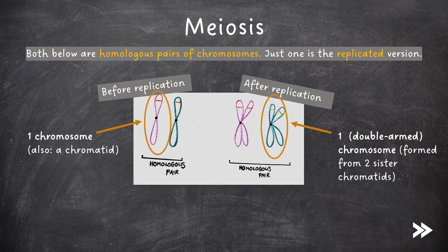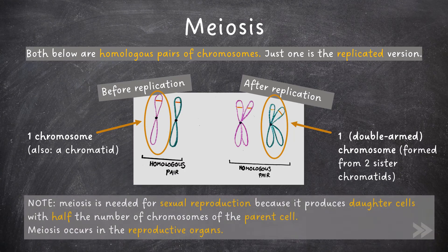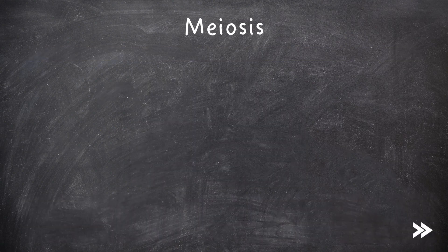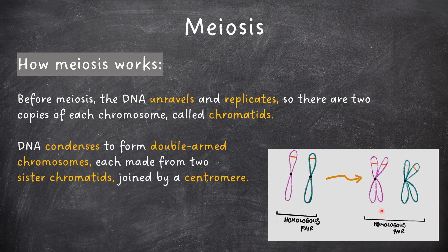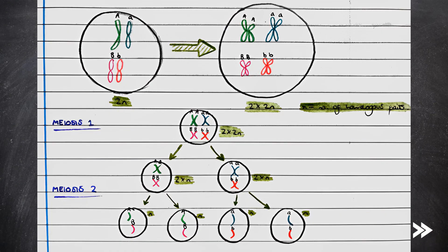I found all these different terms a bit confusing at A-level at first and found it really helpful to draw out the different examples. Note that meiosis is needed for sexual reproduction because it produces daughter cells with half the number of chromosomes of the parent cell. Meiosis occurs in the reproductive organs. Before meiosis the DNA unravels and replicates, so there are two copies of each chromosome called chromatids. The DNA condenses to form double-armed chromosomes, each made from two sister chromatids joined by a centromere. First the DNA unravels and replicates to form sister chromatids. Then in meiosis 1 the cell divides to result in two cells, each containing two sister chromatids. Then in meiosis 2 each of the sister chromatids separate and the cells divide again to leave us with four cells, each containing two single chromatids.